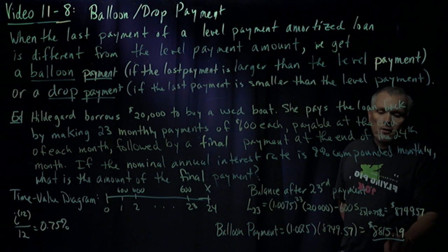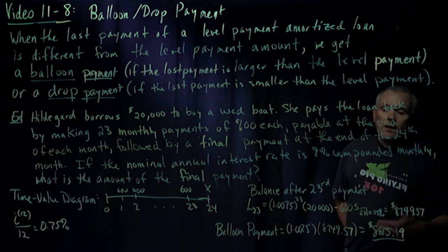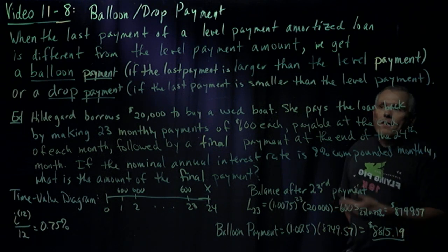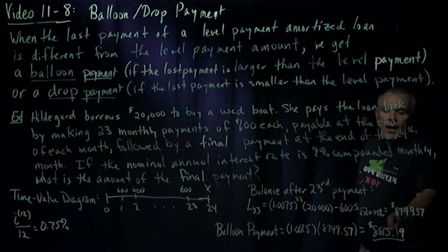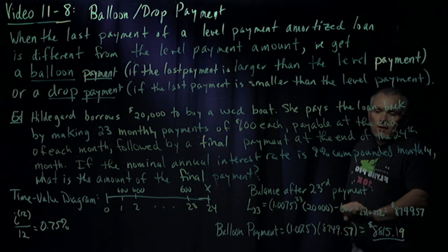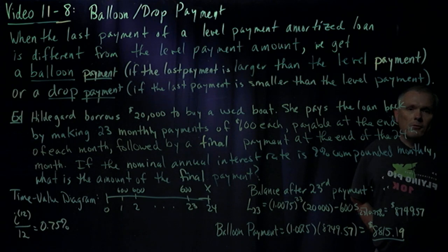And it's a balloon payment in this case because that $8,815 is certainly significantly larger than the level of payment we've been paying along. Had this turned out to be a smaller value than the $600, we would have called it a drop payment.